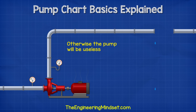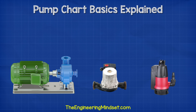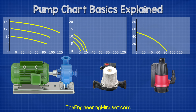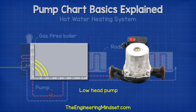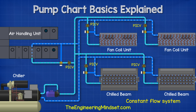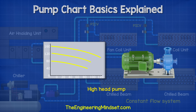Otherwise, we're not going to get any liquid out the other end. When we look at the pump charts, we'll find pumps ranging in head and flow rate. For example, when we look at a small domestic heating system, there are few fittings and short pipes, so we would use a pump with a relatively low head pressure. But if we were to look at a commercial heating system with multiple air handling units, fan coils and long pipe lengths, then we know the pressure drop will be much higher, so we would need a pump that can provide much more head pressure.